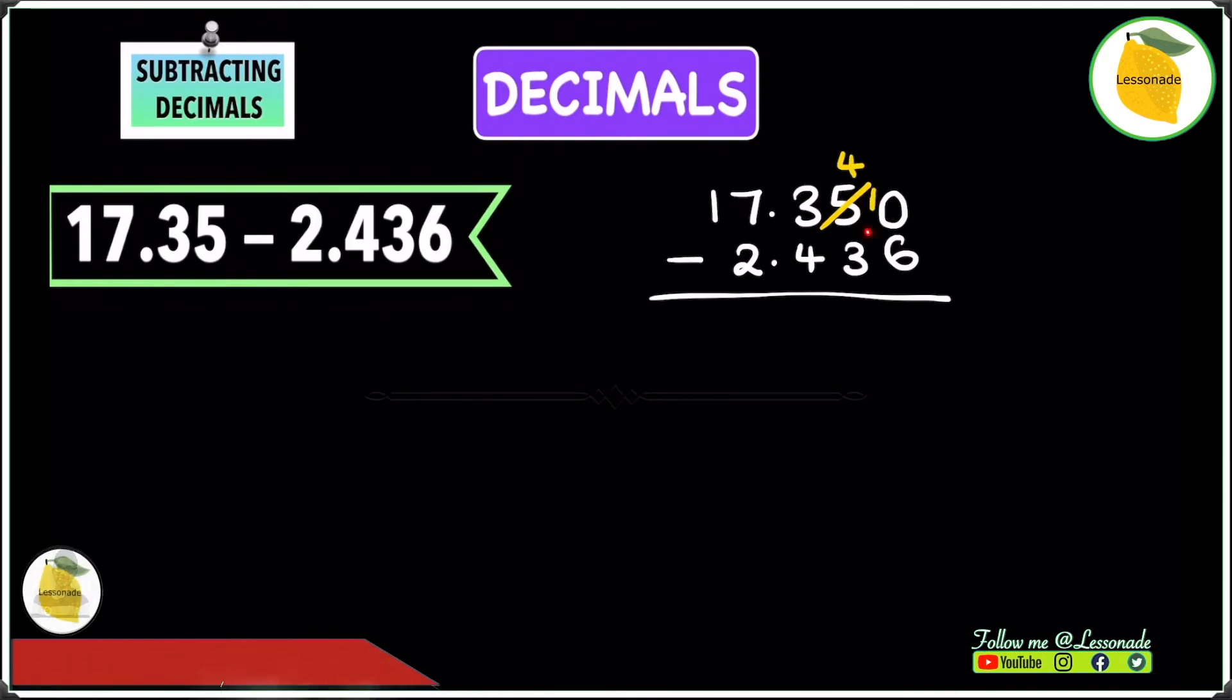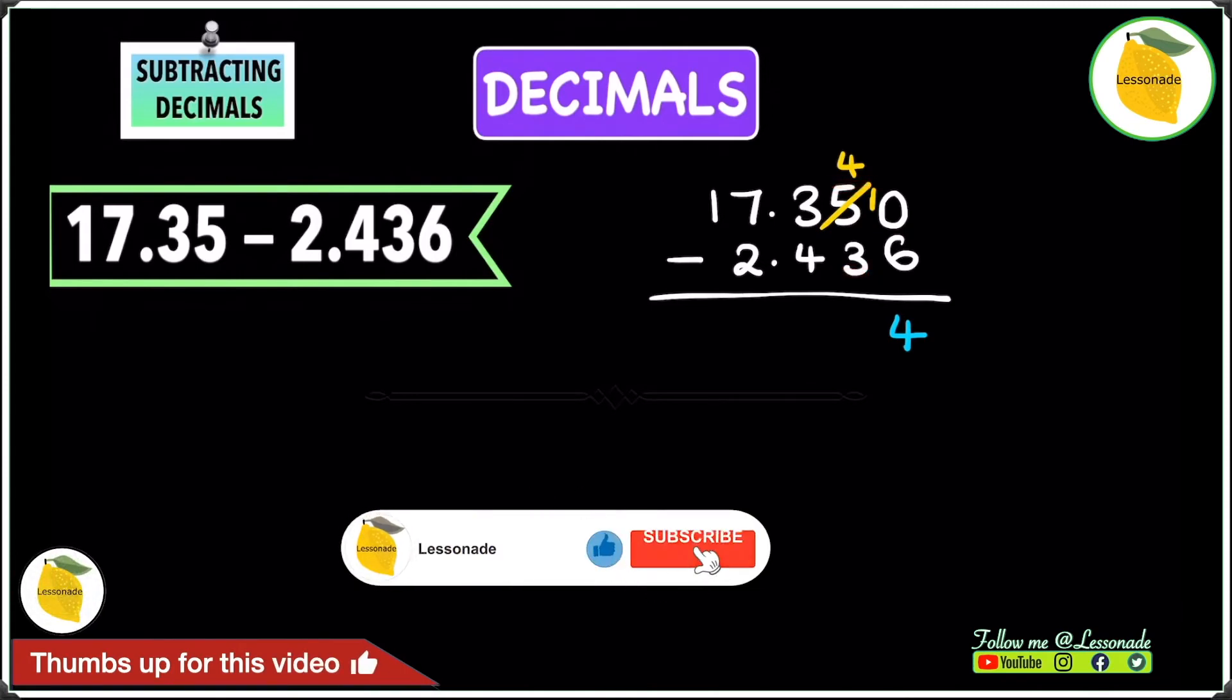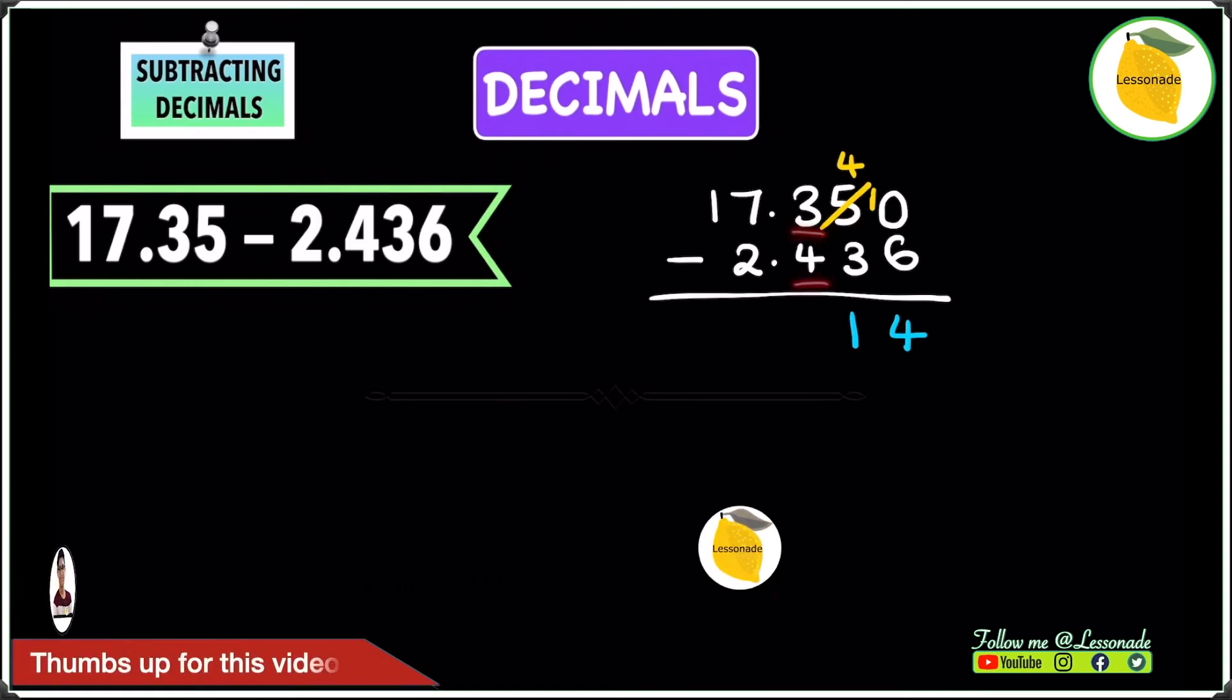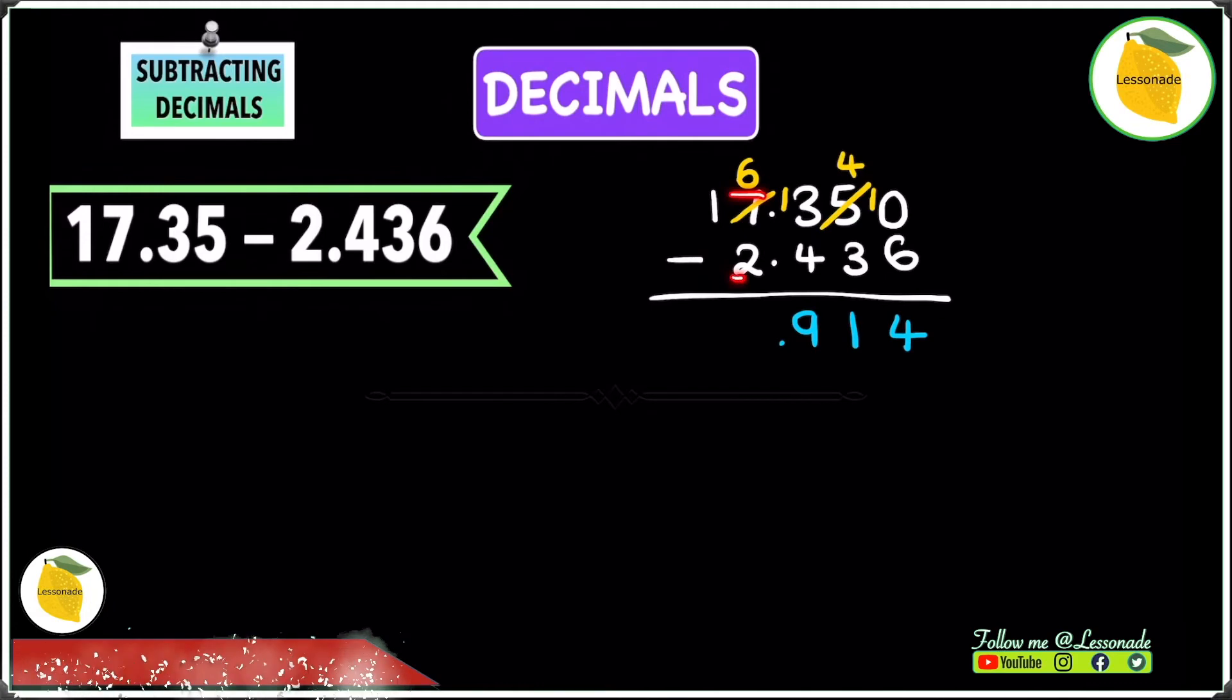Now you do 10 minus 6, and 10 minus 6 is 4. Next you do 4 minus 3, which is 1. Then you have 3 minus 4. 3 is smaller than 4, so borrow a 1 from the 7. The 7 becomes 6, and add a 1 in front of the 3 to make it 13.